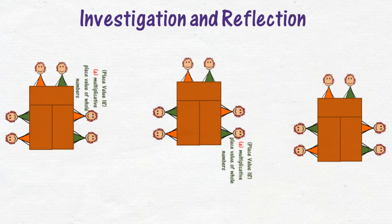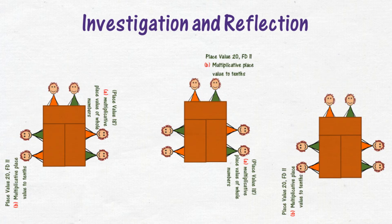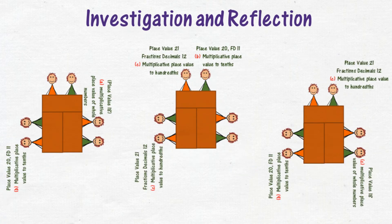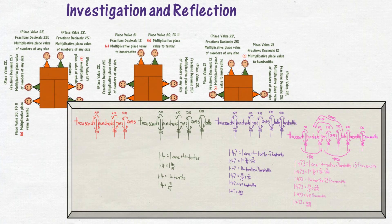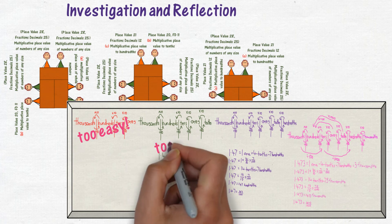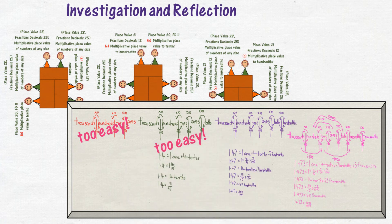For example: A. Multiplicative place value of whole numbers; B. Multiplicative place value to tenths; C. Multiplicative place value to hundredths; and multiplicative place value of numbers to any size. Children may be directed to their level by the teacher, or children look at the levels recorded on the board during explicit teaching. If one level is too easy, they look at the next level, continuing until they find the level that is just beyond their current understanding.